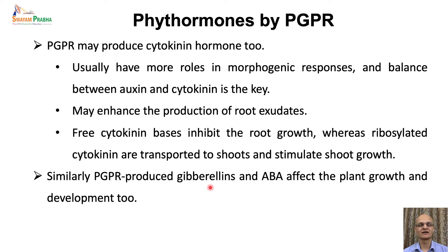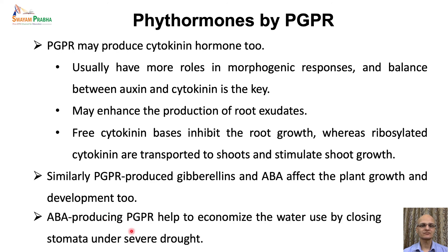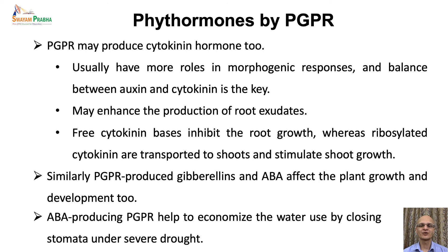PGPR-produced other hormones like gibberellins and abscisic acid also affect plant development; however, for these hormones very little data is available. ABA-producing PGPRs participate in ABA-dependent mechanisms of drought tolerance and help to economize water use by closing stomata under severe drought or water-limiting conditions. The application of ABA-producing PGPRs can therefore improve crop performance under water-limiting conditions. In conclusion, PGPR-produced phytohormones are important signals in plant-microbial interactions and in establishing the relationship between microbes and plant roots.